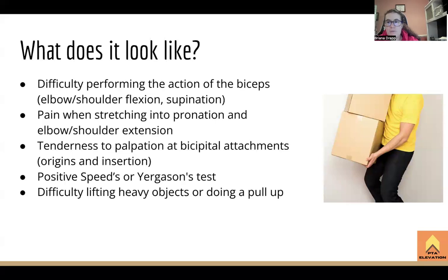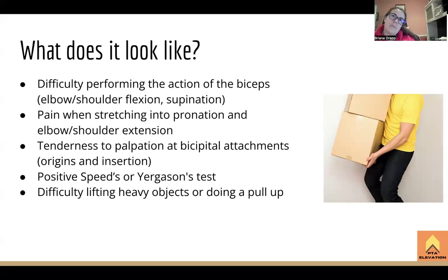In terms of presentation, the patient will have difficulty performing the actions of the biceps — not just shoulder and elbow flexion, but also supination, which is actually a big component that indicates biceps involvement. Biceps is the main supinator of the arm. There is also pain when stretching into pronation, elbow and shoulder extension. Putting the arm behind you, pronated and extended, creates maximum stretch on the biceps. Tenderness on palpation is at the bicipital attachments: the supraglenoid tubercle, the coracoid process, and the distal bicipital aponeurosis.